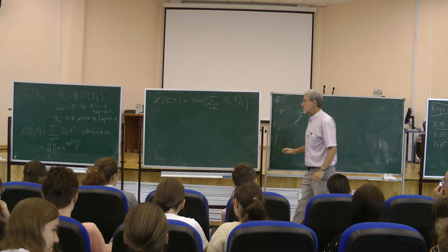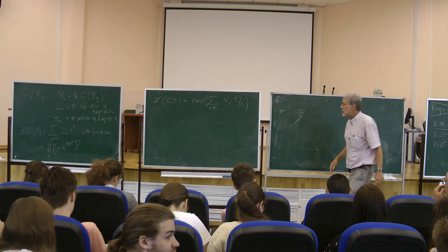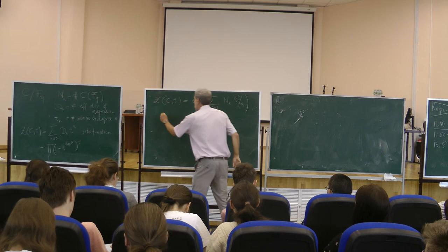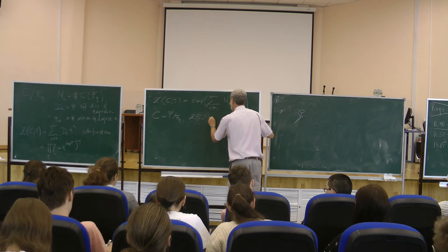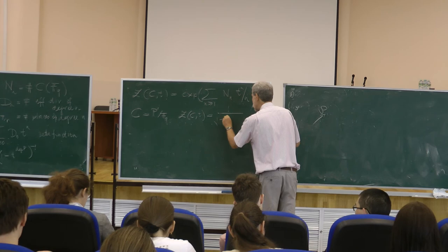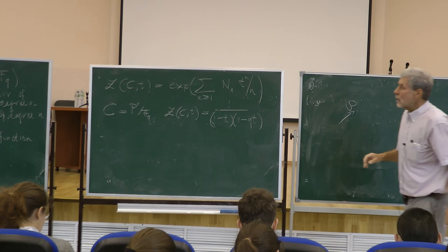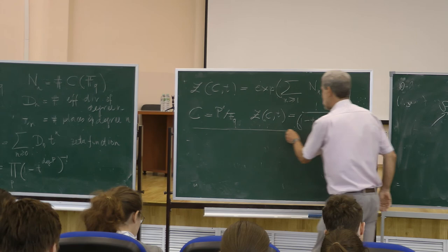That is the other way of writing it, which connects the d_N with the N_N. We have seen, for example, in case that C is the projective line over F_Q, that the zeta function of C is equal to 1 / ((1 - t)(1 - Qt)). So that is the beginning, and now we want to understand this zeta function better.